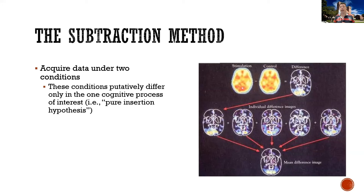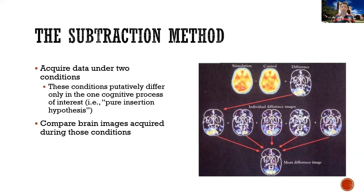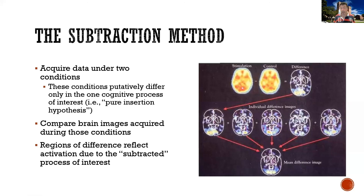We measure the BOLD response under two different conditions and subtract one from the other, as shown in the top row of this illustration: condition A minus condition B, leaving only where they differ. The idea is that wherever you see activation in the difference map, that is where the brain is particularly engaged by whatever cognitive process differed between the two tasks. We interpret regions of difference as reflecting the cognitive process that differed between our two tasks.